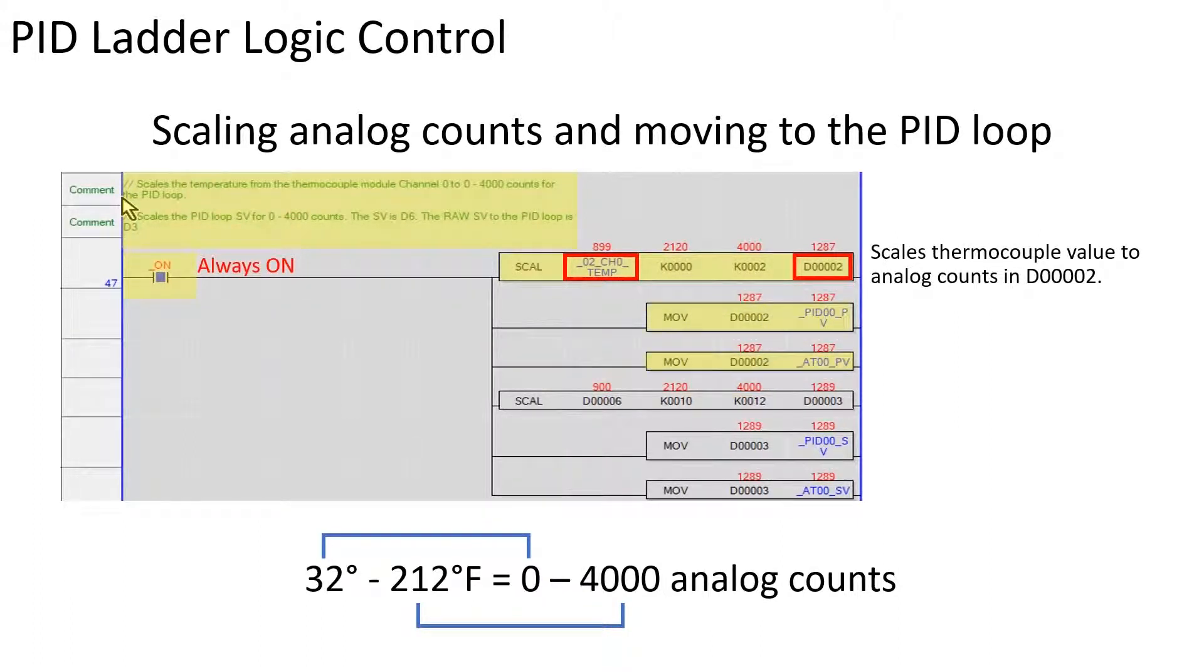The MOVE instruction moves the value in D2 to the pre-assigned internal PID PV variable and autotune variable for use in the PID loop calculation.